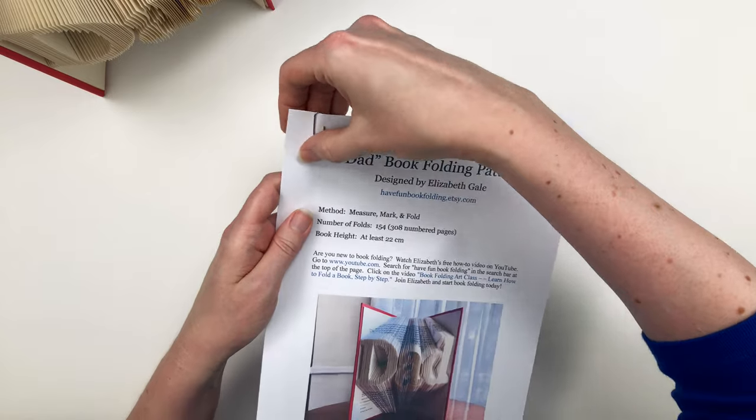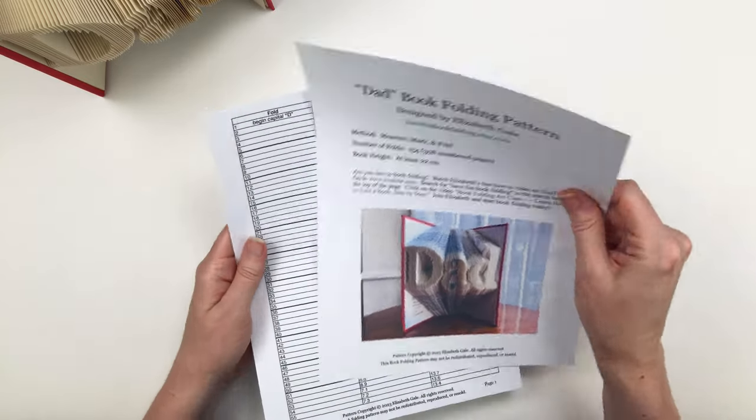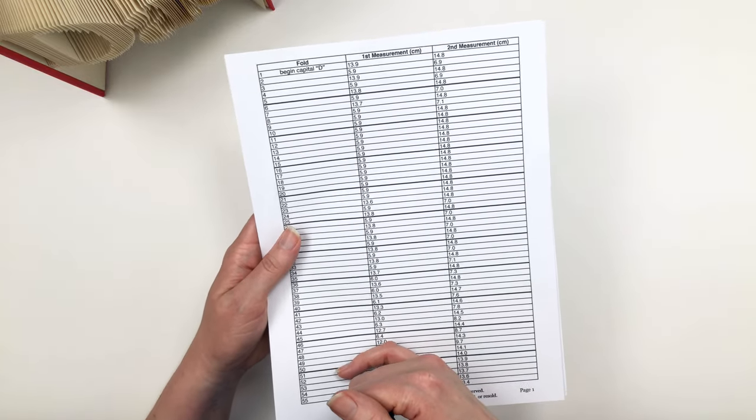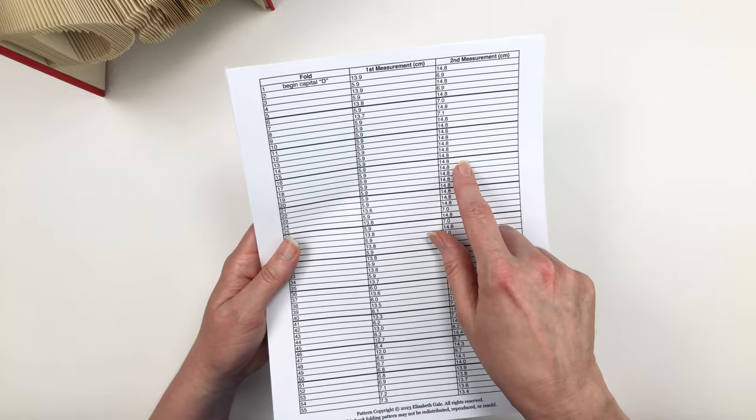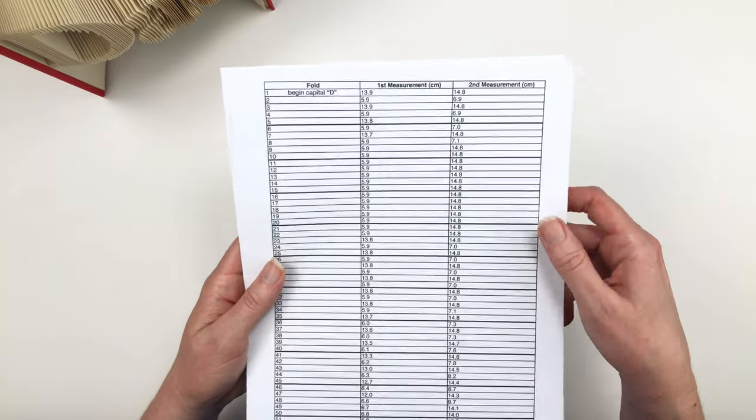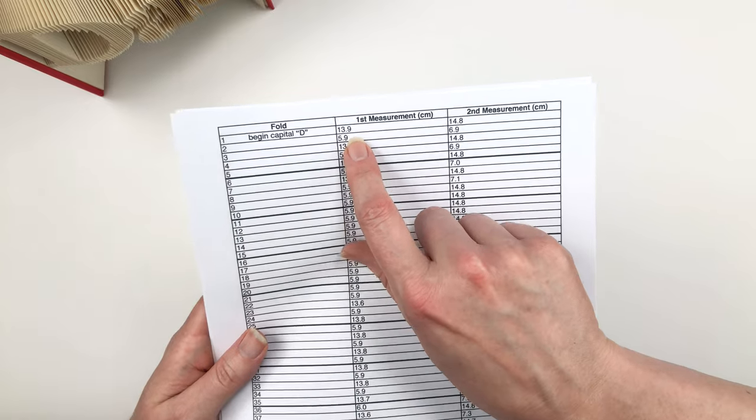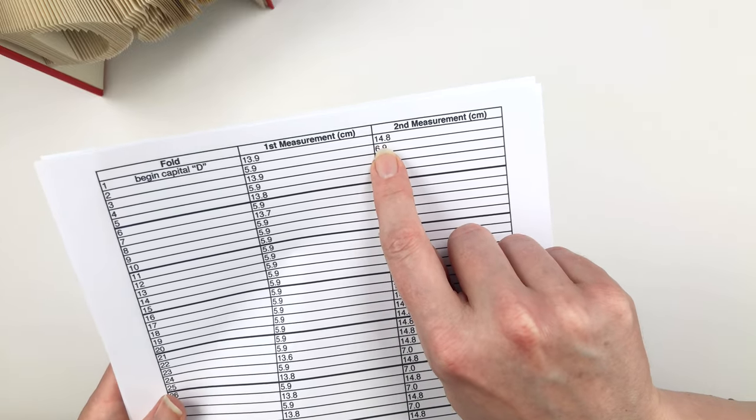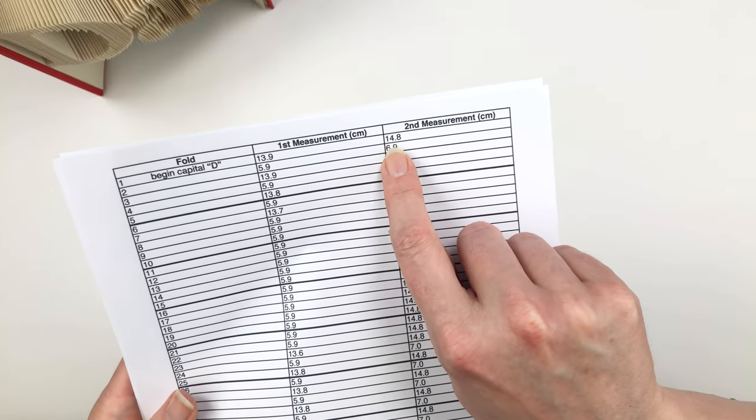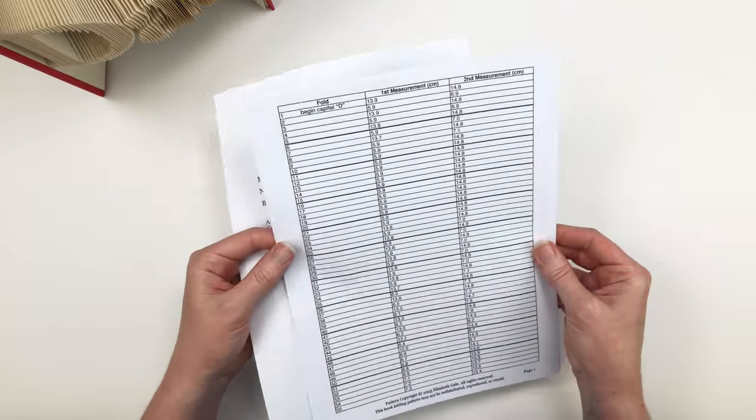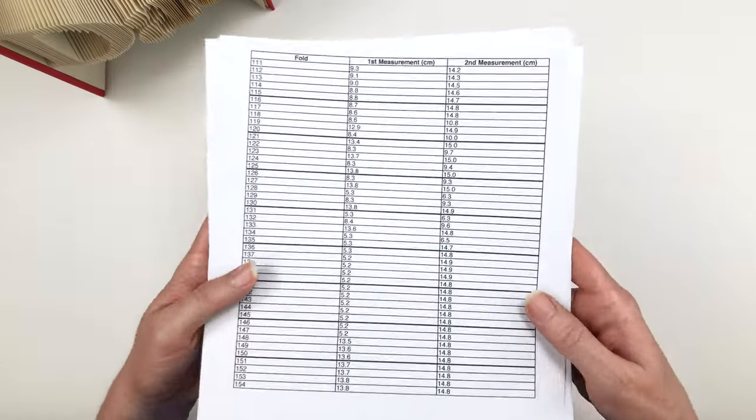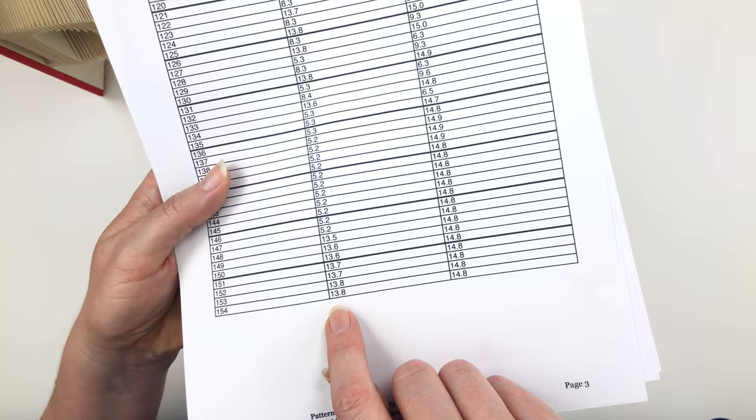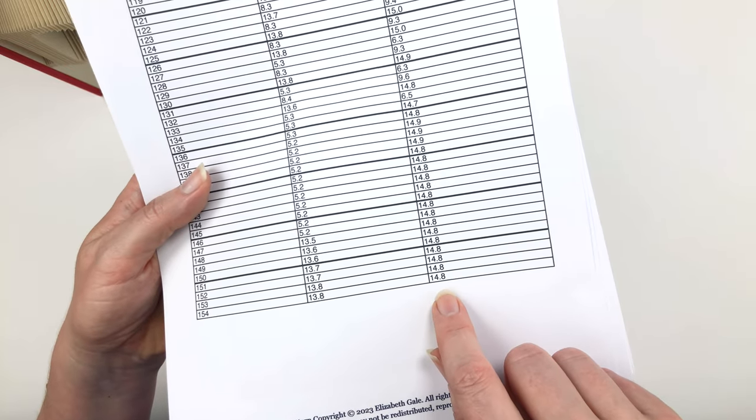Let's go to the next page of the pattern. You can see that it is the typical table of measurements that we'll be working through, where each line of the pattern equals one page in your book. If we look at fold number one, you see it's got a first measurement of 13.9 centimeters and a second measurement of 14.8 centimeters. And then the pattern just continues all the way up through fold number 154.